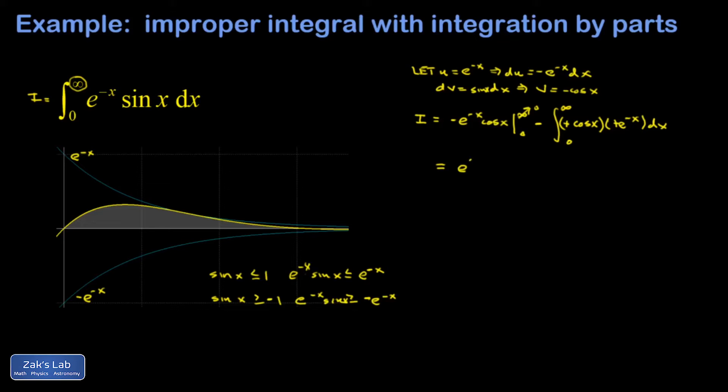So this whole thing becomes 1, and then minus the integral from 0 to ∞ of e^(-x) cos x dx. This is the point where we might get frustrated and say we just ended up with an integral that's just as bad as the one we started with.